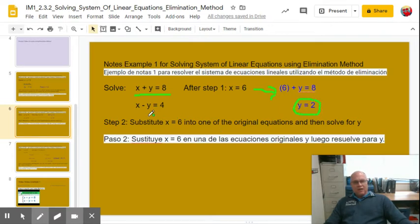Just for fun, let's do it on the bottom equation as well. So if I did the bottom, I would have had 6 minus y equals 4, correct?